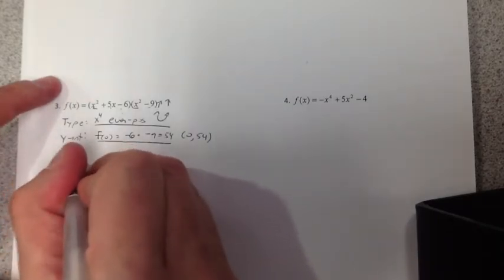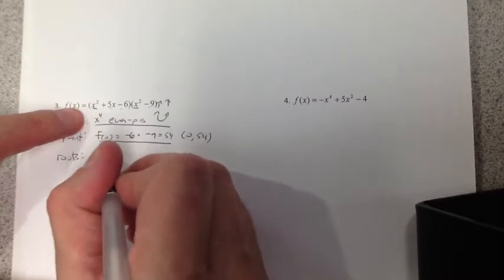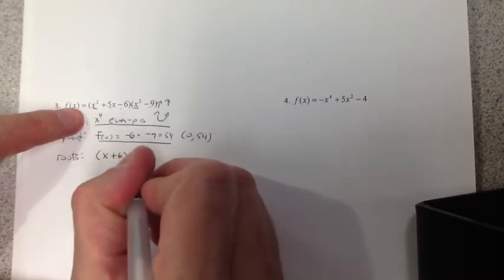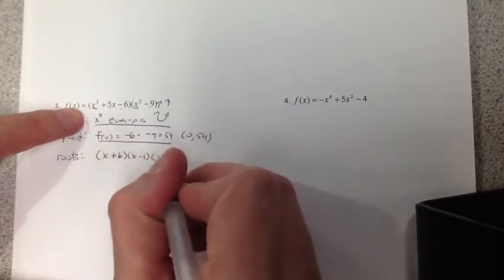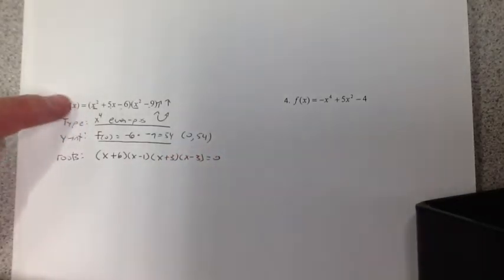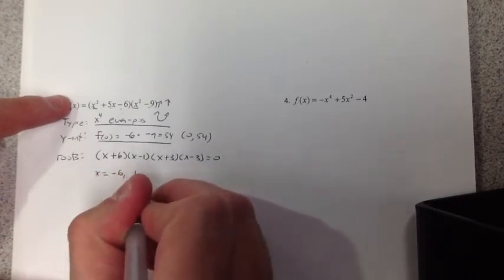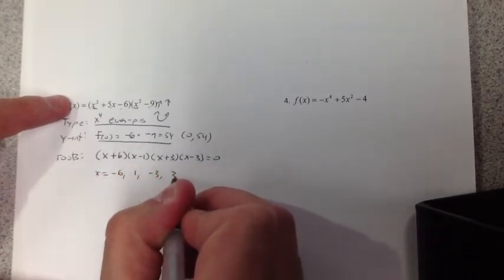Now we're going to go ahead and get the roots. But remember, we first have to factor. This is easy to do. We get (x + 6)(x - 1). Here we get (x + 3)(x - 3). Set those equal to 0. We get negative 6, 1, negative 3, positive 3.